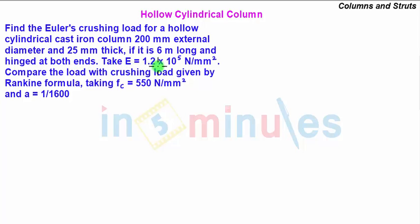Take E equal to 1.2 times 10 to the power 5 Newton per mm square. Compare the load with the crushing load given by Rankine's formula taking FC equal to 550 Newton per mm square and Rankine's constant a equal to 1 by 1600.